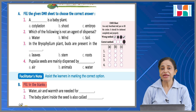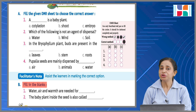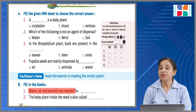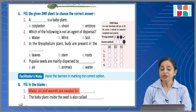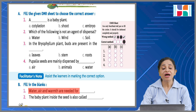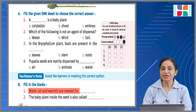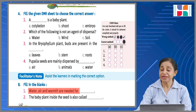Fill in the blanks: you have to complete the sentence by writing a word or two words. For example: water, air, and warmth are needed for — you read in the chapter that these are needed for germination. Similarly, read all the lines, find the answers from the chapter, and fill them in. You will find the answers in the chapter and write them in the blanks.